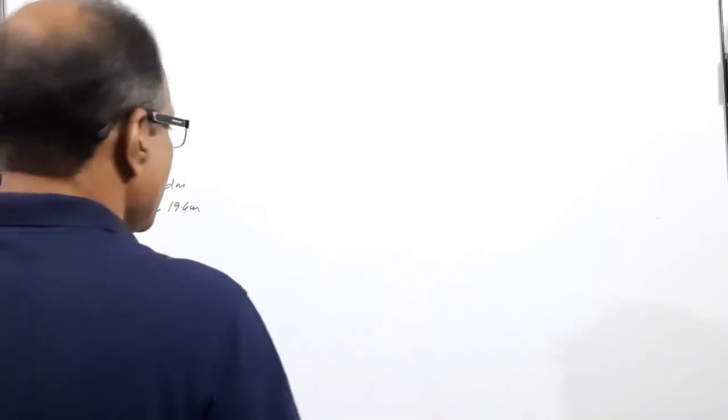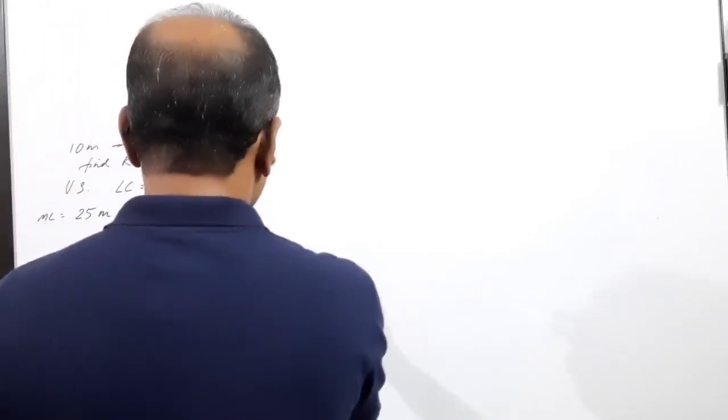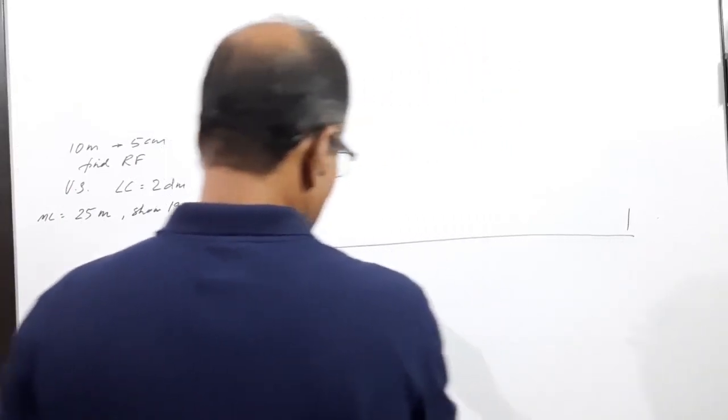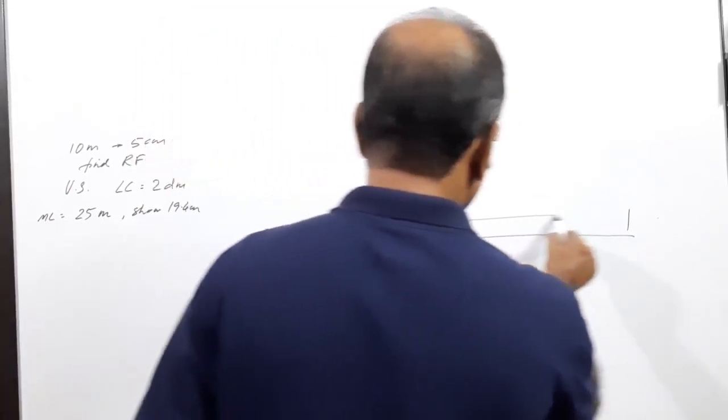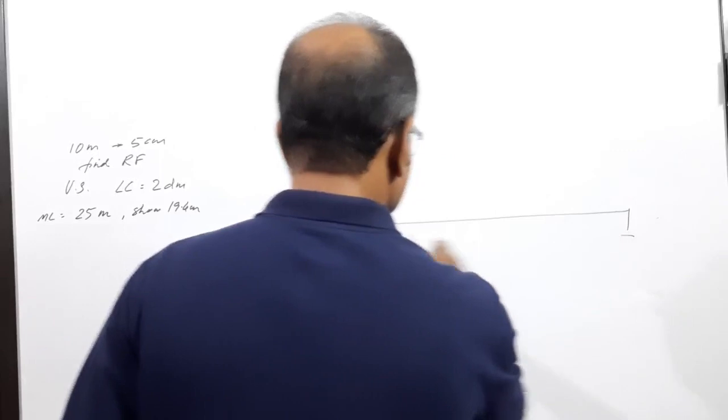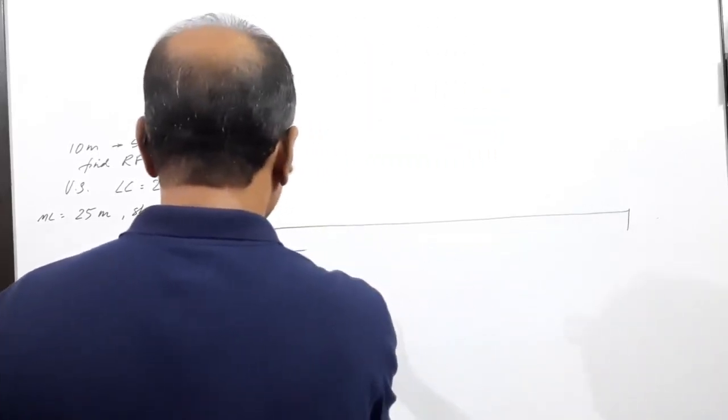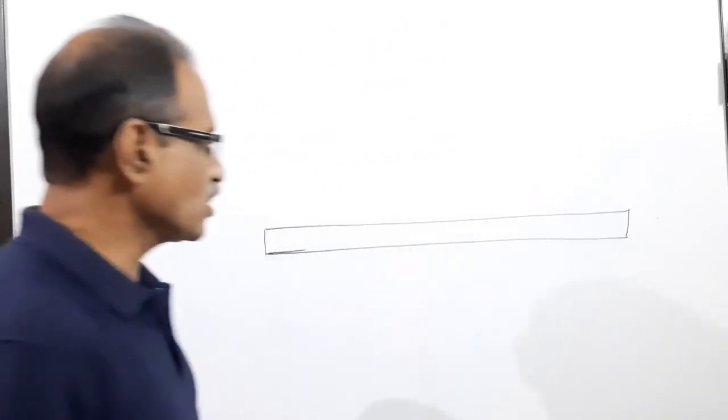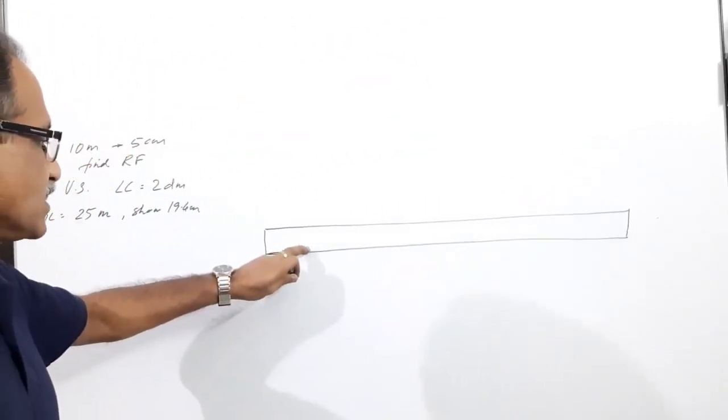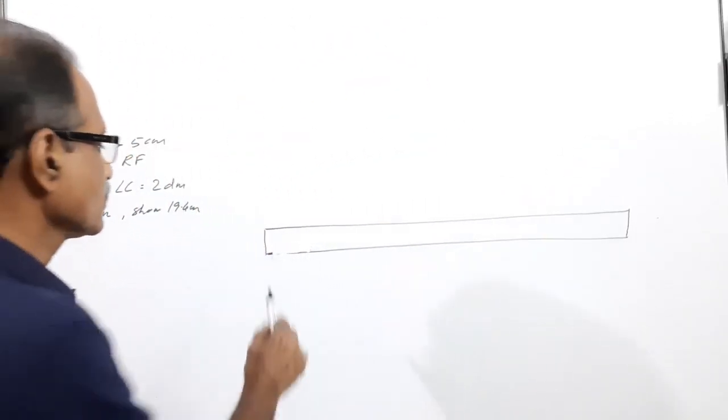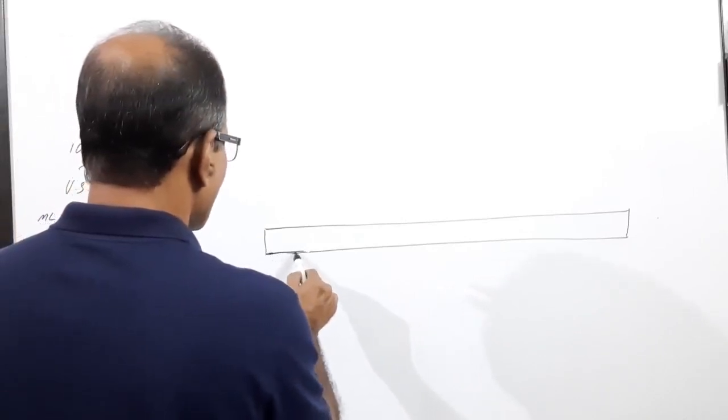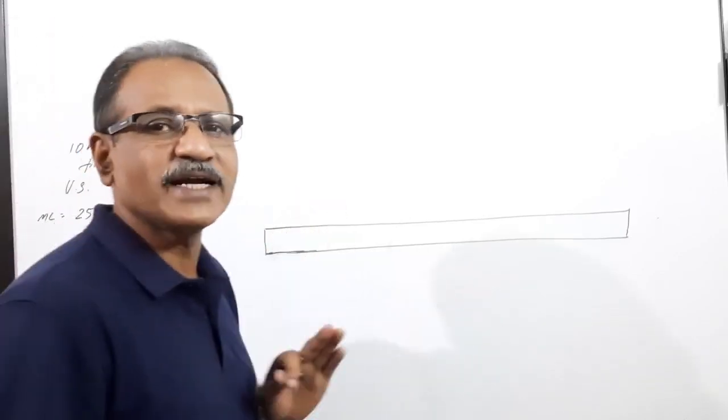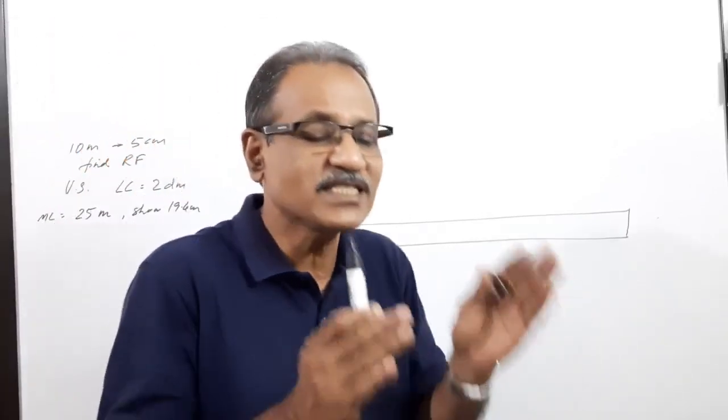Construct a rectangular strip whose length is 12.5 centimeters. What does it represent? It represents 25 meters. I comfortably divide this into 5 equal parts so that each division represents 5 meters.